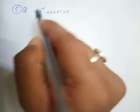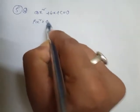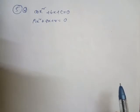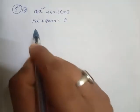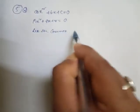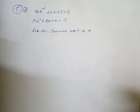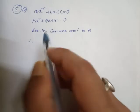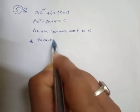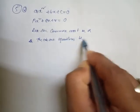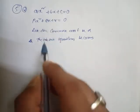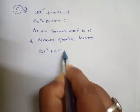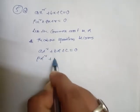The equation given is ax² + bx + c = 0. One more equation is given: px² + qx + r = 0. Since the question states there is a common root, let the common root be alpha. If the common root is alpha, then the above equations become: a·alpha² + b·alpha + c = 0 and p·alpha² + q·alpha + r = 0.